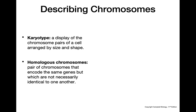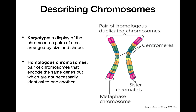To understand karyotypes and other genetic processes, it's important to understand homologous chromosomes. Homologous chromosomes are a pair of chromosomes that code for the same genes but are not identical — they can have different versions of the same gene, such as different alleles. Each individual chromosome in such a pair is called a sister chromatid, and together the full pair forms homologous chromosomes.